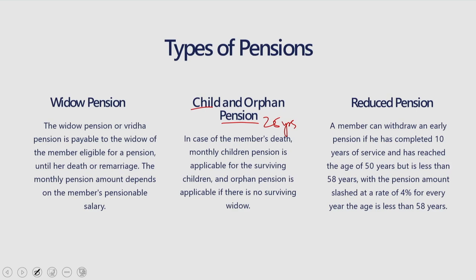Regarding reduced pension: a member of EPFO can withdraw an early pension if he has completed 10 years of service and has reached age 50 but is less than 58 years. The pension amount is slashed at a rate of 4% for every year the age is less than 58. For example, if the member withdraws at age 56, that is 2 years early, so 4% × 2 = 8% reduction — meaning he receives 92% of the original pension amount.